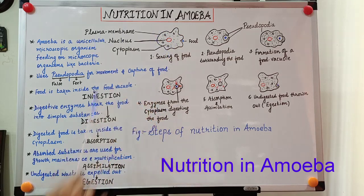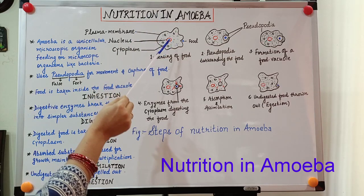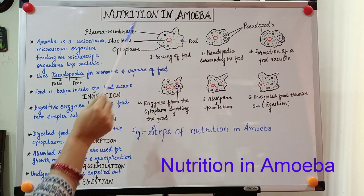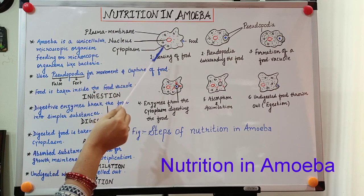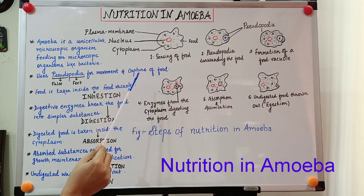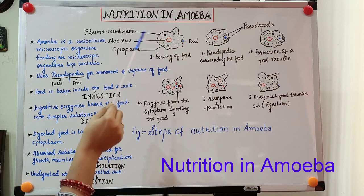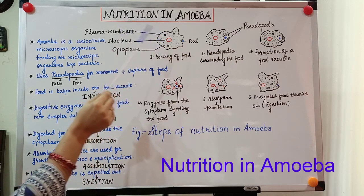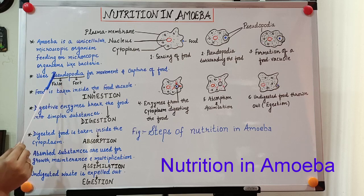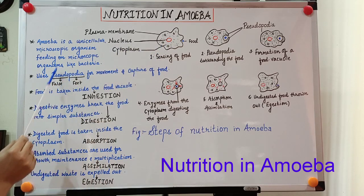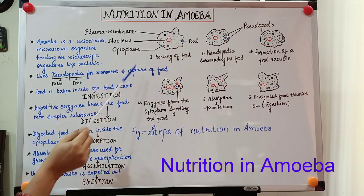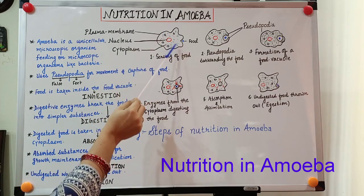Now we will see the nutrition in amoeba. To start the nutrition it must intake the food. It feeds on smaller microscopic organisms like bacteria and dead organic matter. Since amoeba does not have a mouth, it uses a very special structure called pseudopodia, meaning false feet, because these structures look like false feet. The pseudopodia are used for movement as well as for capture of food.